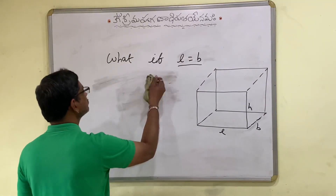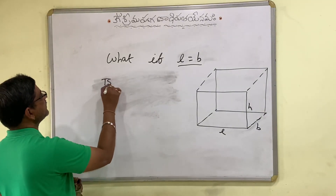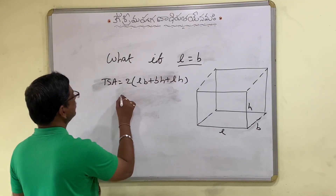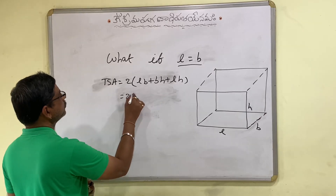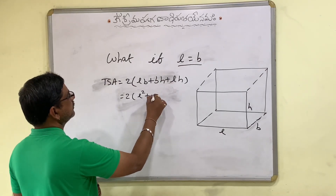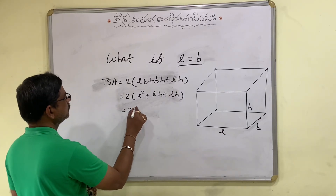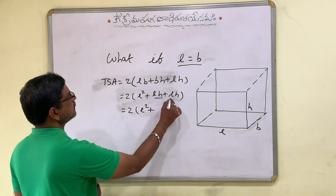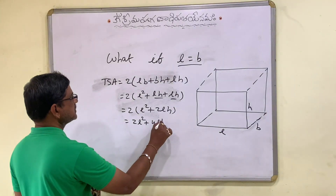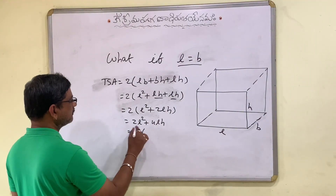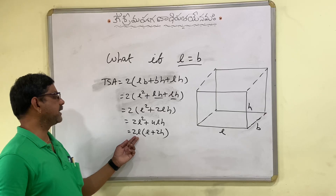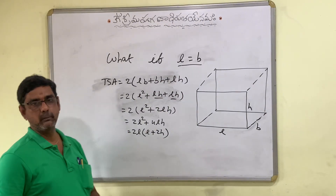Now let's consider the total surface area. We know total surface area of cuboid is 2 times of LB plus BH plus LH. Now what happens if L is equal to B? Since L equals B, LB becomes L square, and B is replaced by L everywhere, giving LH plus LH, which is 2LH. So it becomes 2 times of L square plus 2LH, which simplifies to 2L square plus 4LH. Taking 2L common, this gives 2L into L plus 2H. So the total surface area of cuboid becomes 2L into (L plus 2H) if L is equal to B.